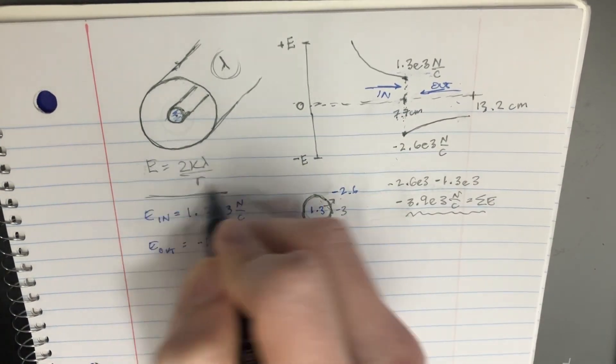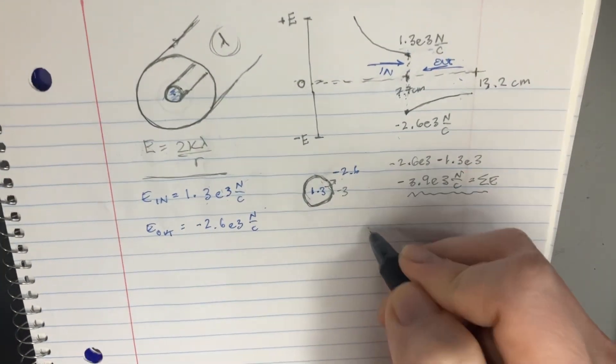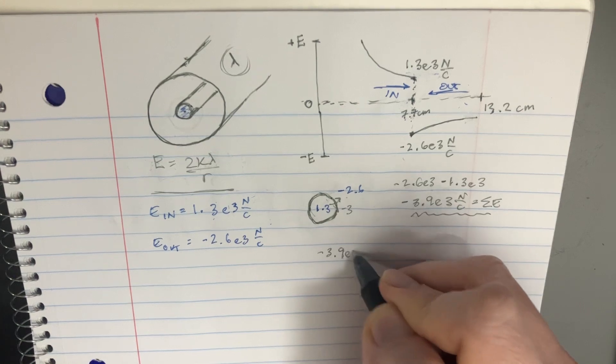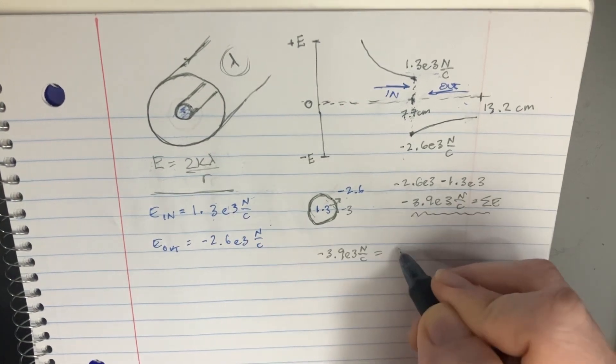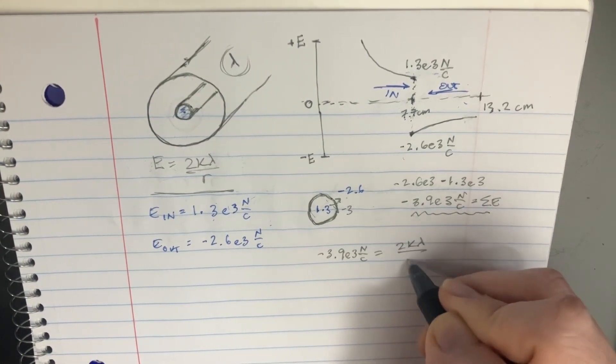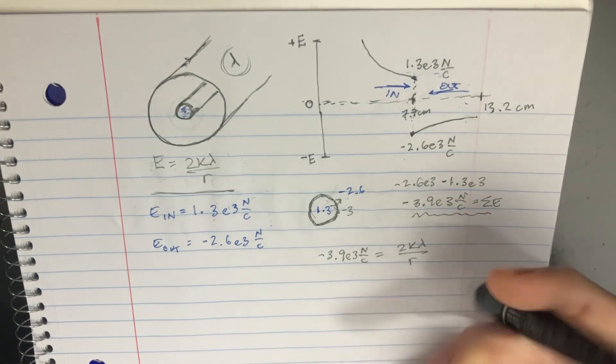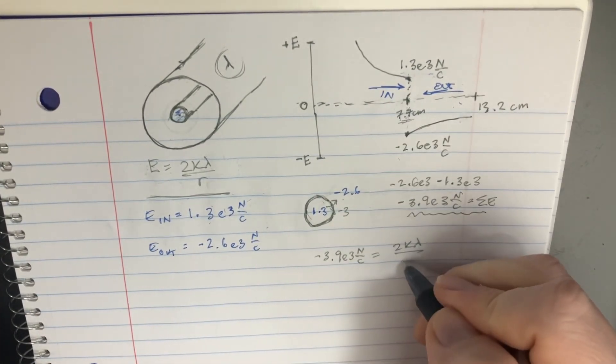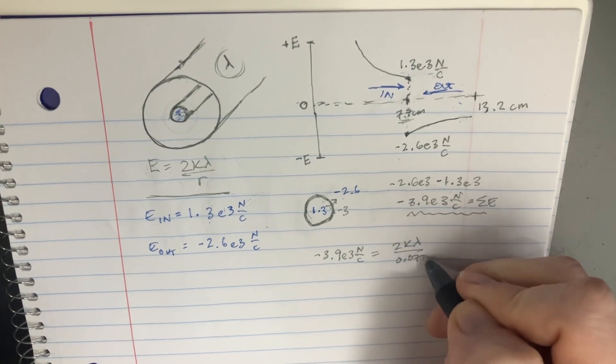Now we can go ahead and plug that into this equation over here. So we'll say that negative 3.9 e to the third is going to be equal to 2k lambda over r. And we know that r in this particular situation is supposed to be 7.7, 0.077 meters.